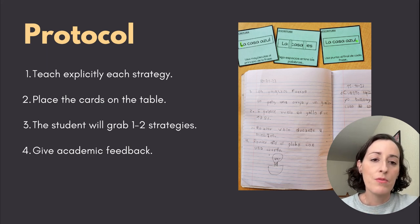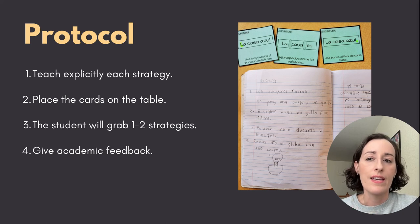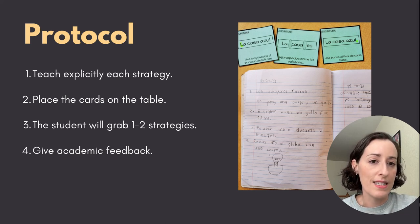The last step would be to give academic feedback totally aligned with those strategies. So when I'm doing my checks for understanding one-on-one, I can say something like, I like how you're using the capital letter at the beginning. Your next step is going to be to increase the space between the words so it's going to be easy to read the sentence. And also don't forget to include your period at the end.